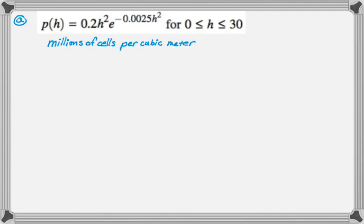So we are told that the density of plankton cells in millions of cells per cubic meter is modeled by this function, P of H, valid from zero to 30. It's in millions of cells per cubic meter. So there's a lot going on there.